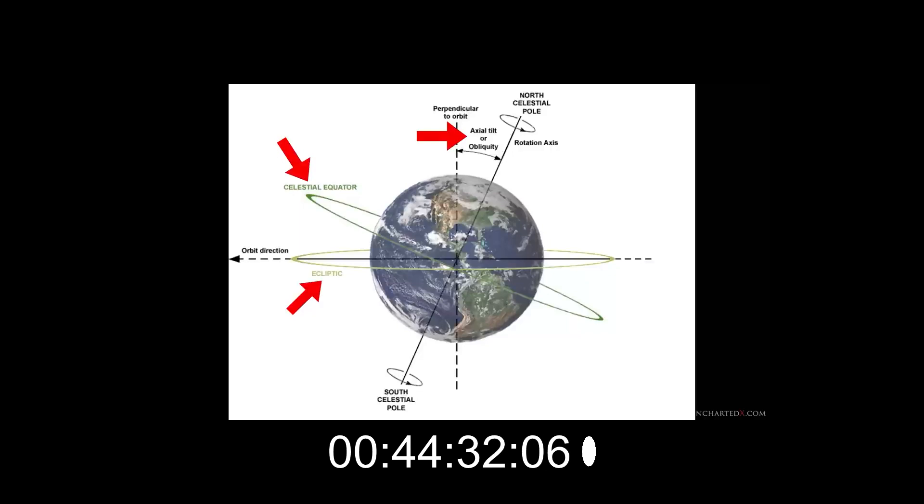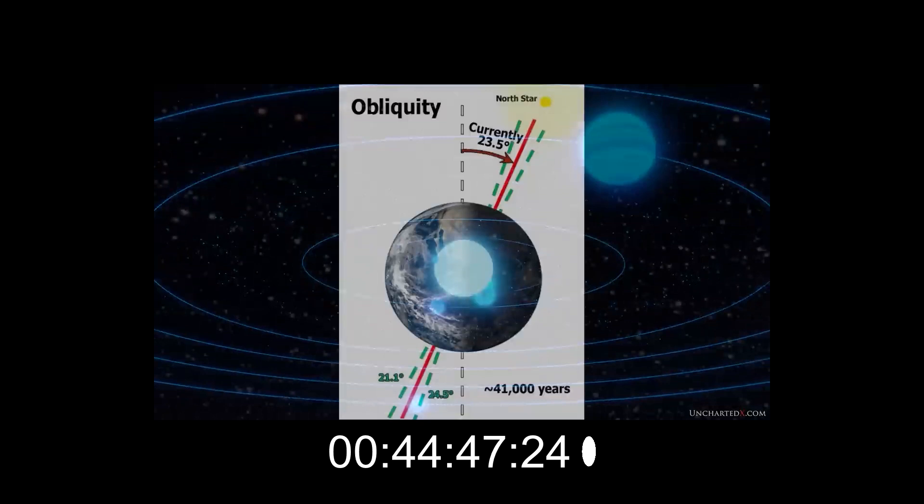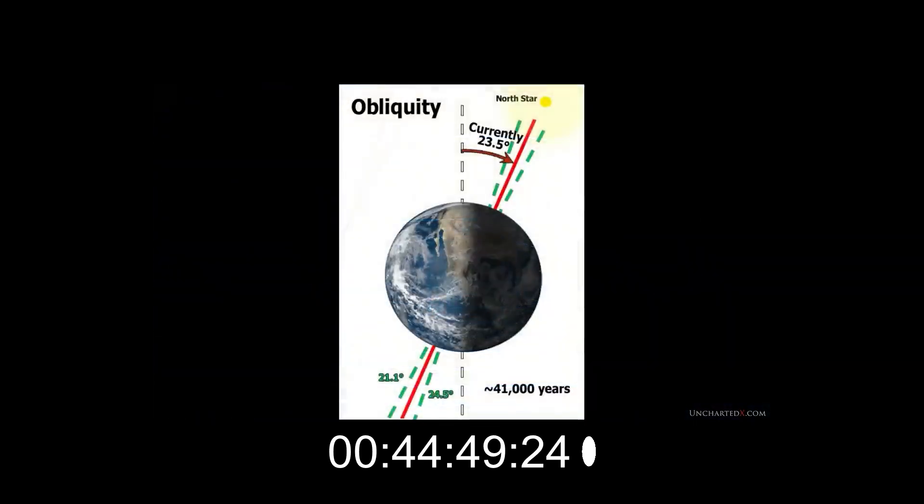This tilt in the Earth's equator gives us the seasons as we orbit the sun. The degree of this tilt is not fixed, however. There is a slight oscillation to it, and its value swings between 22.1 degrees and 24.5 degrees in a cycle that takes around 41,000 years to complete.